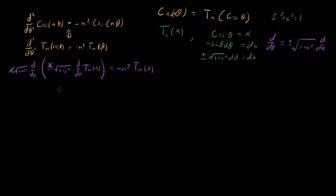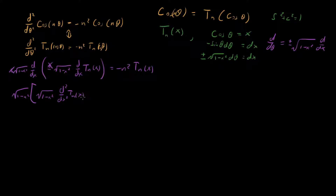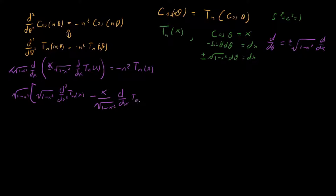The last thing we need to do is a product rule, because when we apply the derivative twice we get a product rule from the way the derivative gets redefined under the change of variables. We pull down one-half then minus two, giving minus x over root one-minus-x-squared, all times d/dx of T_n of x. This whole thing equals minus n-squared T sub n of x.